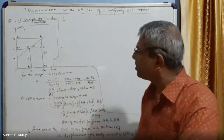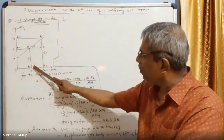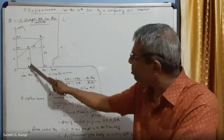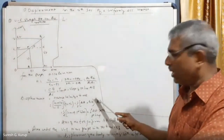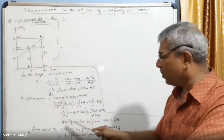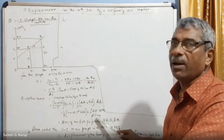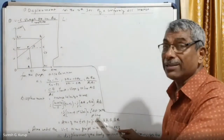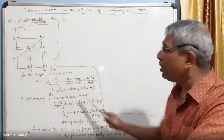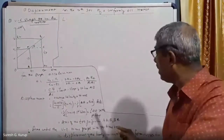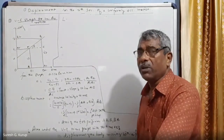This trapezium A1B1BA has A1A as one parallel side and B1B as another parallel side. The area of a trapezium equals half into the sum of the parallel sides multiplied by the perpendicular distance between them. So displacement equals average velocity into time, which equals the area of the trapezium on the velocity-time graph — half into sum of parallel sides into the perpendicular distance between them.